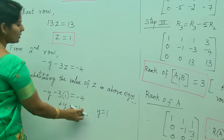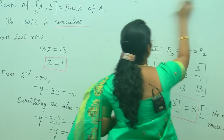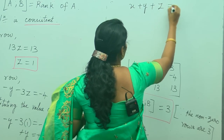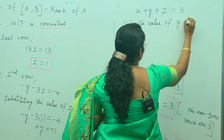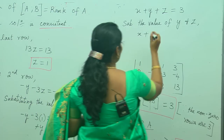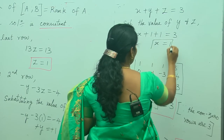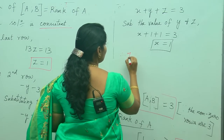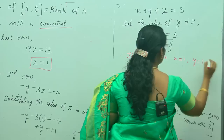We now have the values for y and z. Finally, we get the value of x from the first row. From the first row, we write x plus y plus z equals 3. Substituting y equals 1 and z equals 1: x plus 1 plus 1 equals 3, so x equals 3 minus 2, which gives x equals 1.